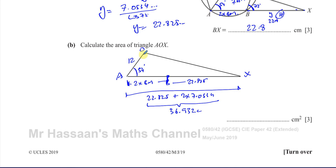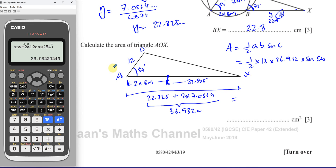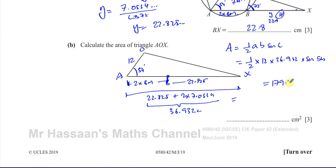I now have a triangle where I know two sides and the angle between them, so I can use the formula: area = ½ × a × b × sin C. That is ½ × 12 × 36.932 × sin(54°). Calculating this gives 179.272, so to 3 significant figures the area of triangle AOX is 179 square centimeters.